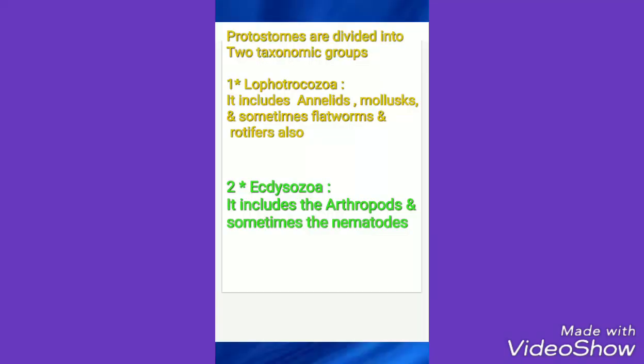Lophotrochozoa includes the annelids, mollusks, and sometimes a few flatworms and rotifers. The group ecdysozoa includes the arthropods and sometimes the nematodes.